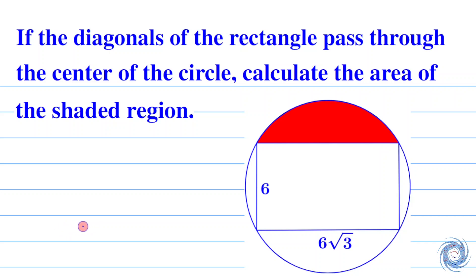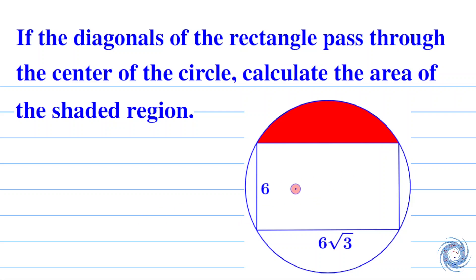Hello everyone, welcome to the family of atomic mathematics. In this video we will solve a problem from geometry. The question is: if the diagonals of the rectangle pass through the center of the circle, calculate the area of the shaded region. We have a circle that circumscribes the given rectangle, and the sides of the rectangle are 6 units and 6 root 3 units. We have to calculate the area of this red colored region.